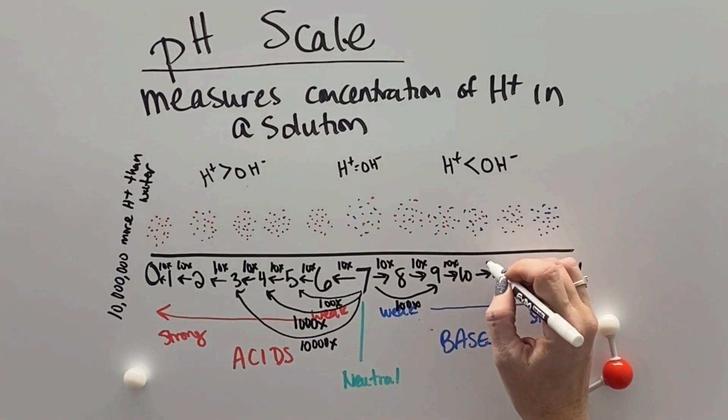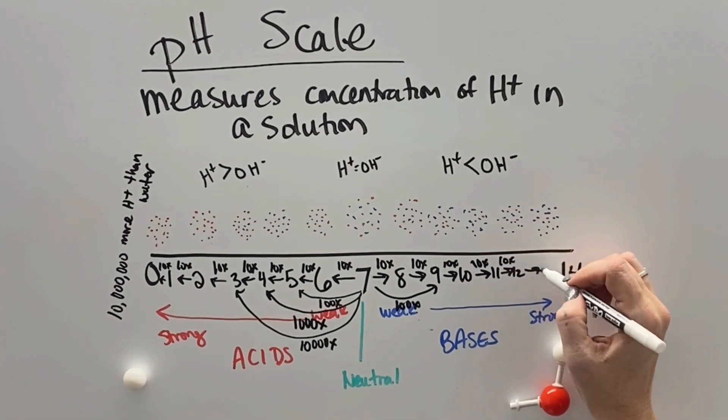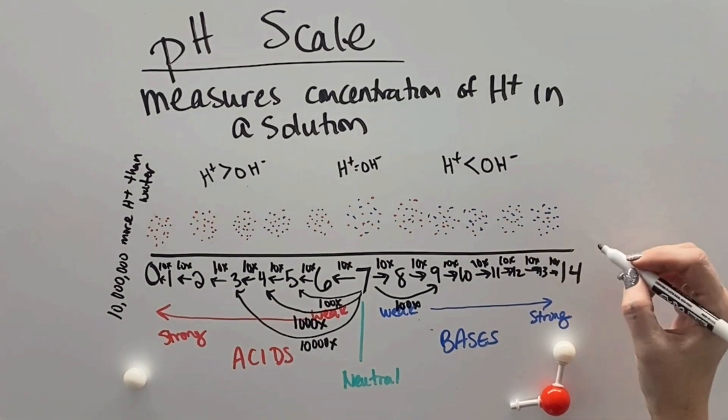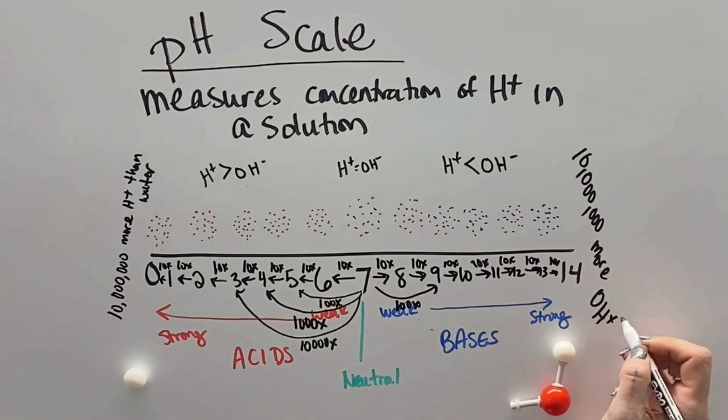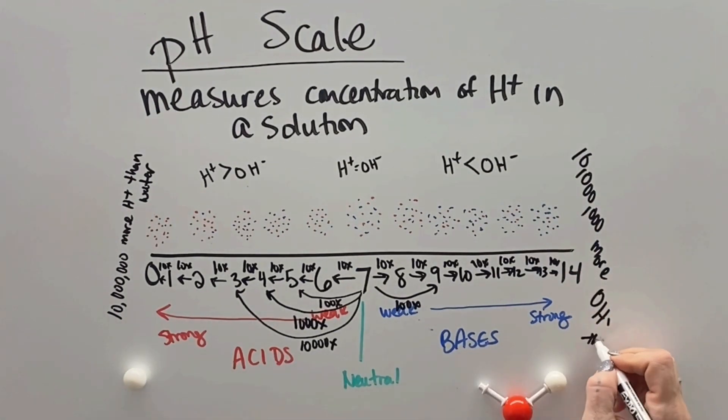The same thing happens with the base side. The farther away that we get from 7, every step on the scale, every number moves 10 times, 10 times, 10 times. And so you wind up with a 14, having 10 million times more hydroxide ions than water.